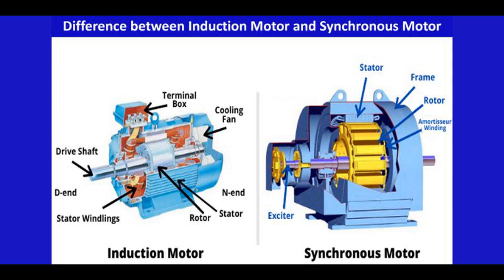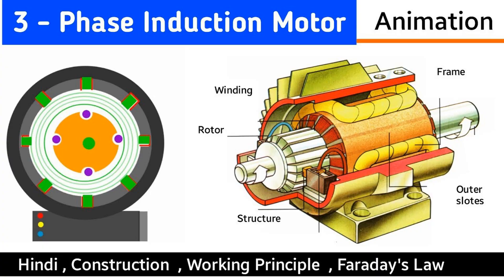Torque generation: the interaction between the stator's rotating magnetic field and the rotor's magnetic field generates a force on the rotor. In an induction motor, the rotor always rotates at a speed slightly less than the rotating magnetic field — this difference is called slip. In a synchronous motor, the rotor rotates at the exact speed of the rotating magnetic field.